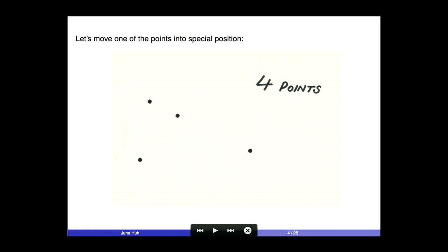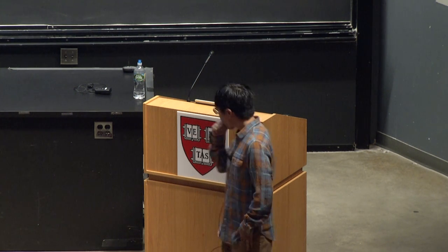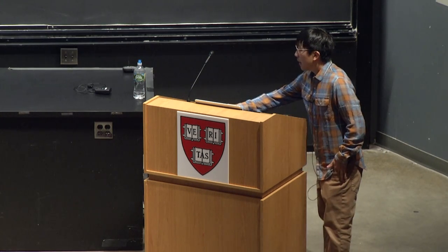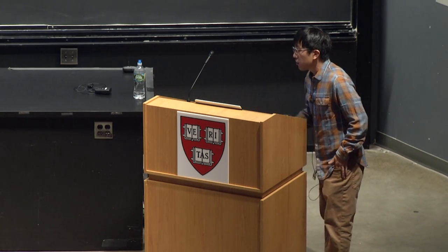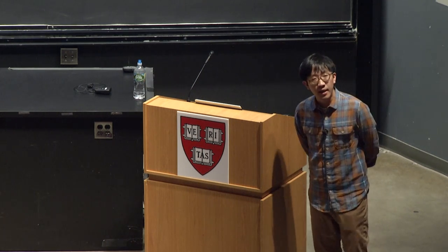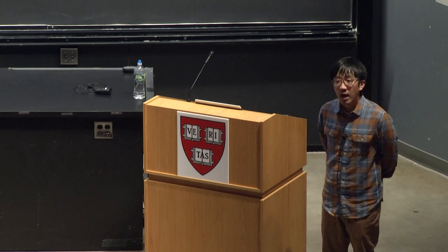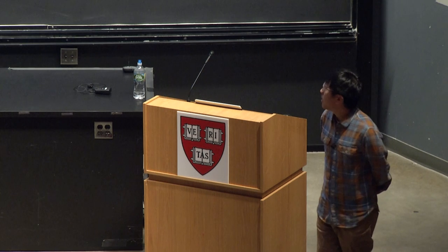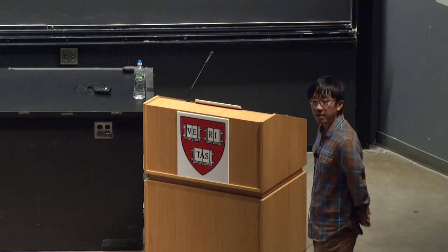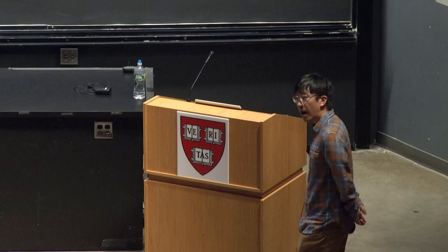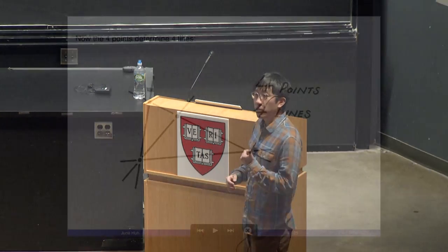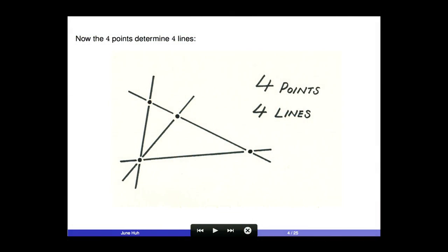The numbers will certainly change if I move the points into special position. If I move one point so that it lies on a line already determined by the others, and again join every pair of points by a line and count how many lines there are, this time you see four lines — so both the number of points and lines are four.